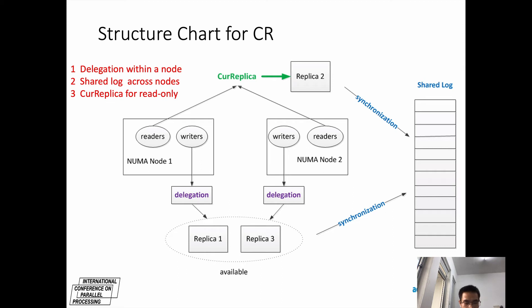In the meantime, all the readers can access the most recent replica with the pointer called CR-replica. When a writer updates a replica, it transitions the CR-replica from the old replica to the new one. Therefore, the CR-replica is always the up-to-date replica.